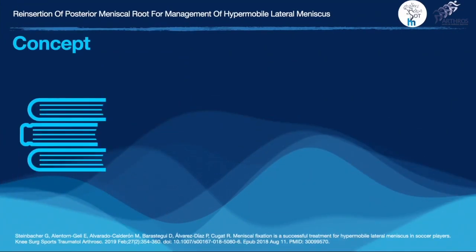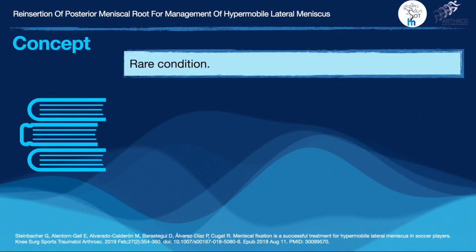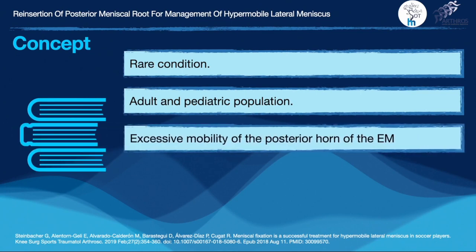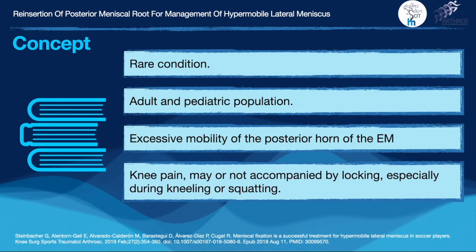Lateral hypermobile meniscus is a rare condition that can be found in adult and pediatric populations. It causes excessive mobility of the posterior horn of the lateral meniscus and is characterized by presenting knee pain and blocking, especially during kneeling or squatting.